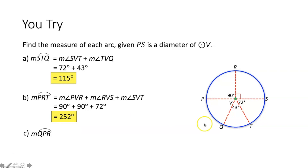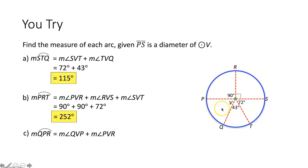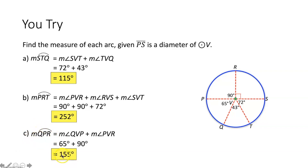Lastly, we find the measure of arc QPR, which is a minor arc. Its measure equals angle QVP plus angle PVR. Angle PVR is 90 degrees. Since segment PS is a diameter, the angles on one side form a straight line adding to 180. So I take 180 minus 43 minus 72, and the measure of angle QVP is 65 degrees. Adding these two angles together, the measure of arc QPR is 155 degrees.